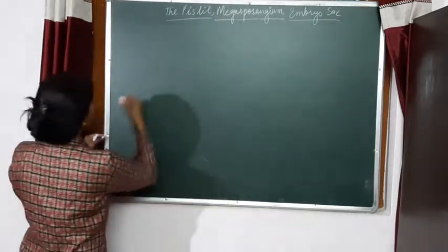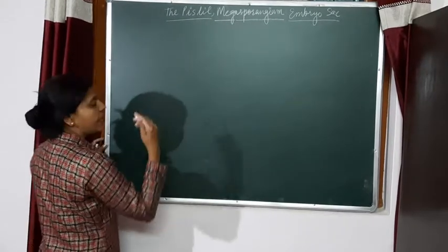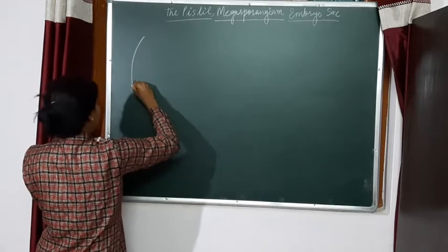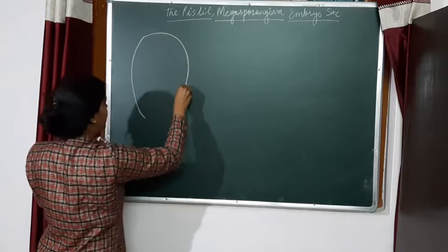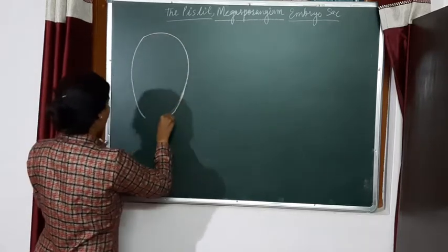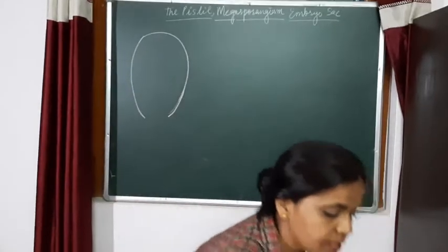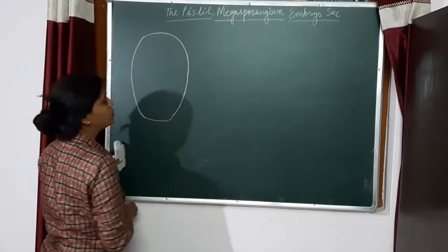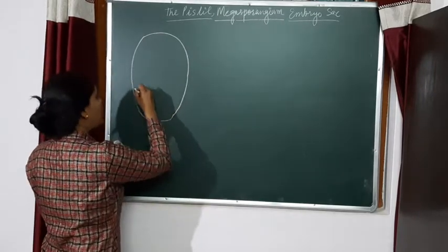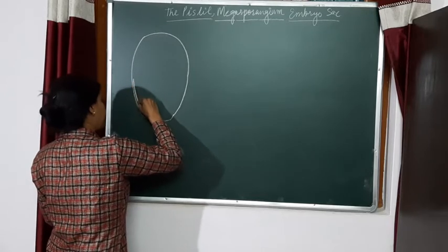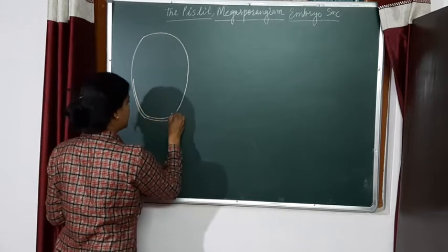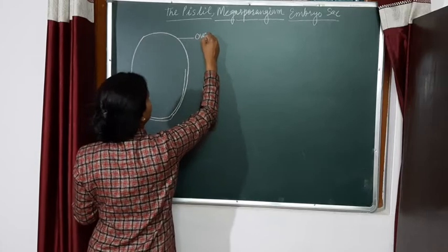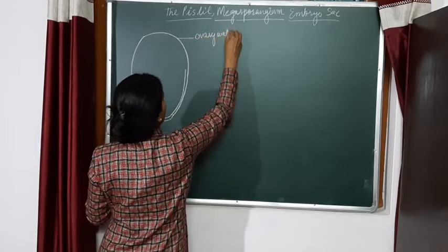Coming to the structure of the ovule, again very important from the examination point of view. If this is the ovary wall, the ovary wall is going to have a placenta. So let me label it. The outermost structure is the ovary wall, then is the placenta.